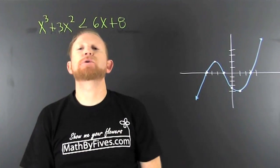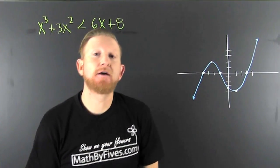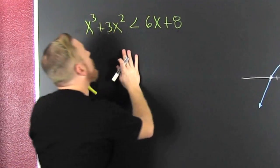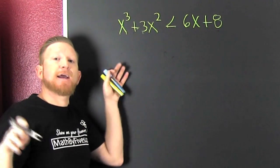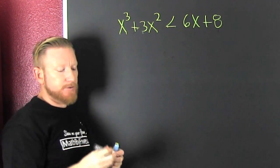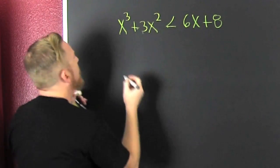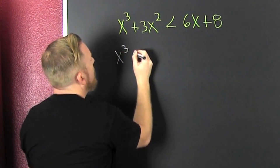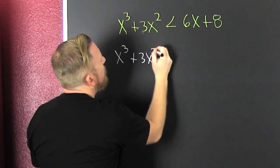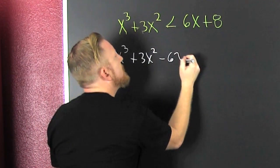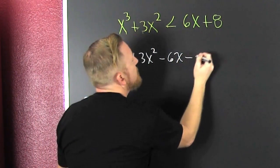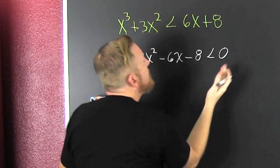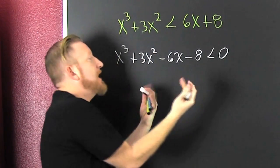What are we trying to do? We're trying to tell a polynomial inequality from a graph. I've got x's on both sides — I want them all on one side. That's an x to the third plus a 3x squared. I'm going to subtract off that 6x, subtract off that 8, and then that needs to be smaller than 0 because I backed that math up.